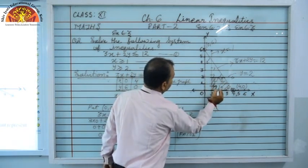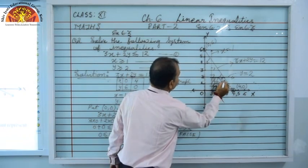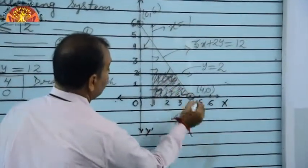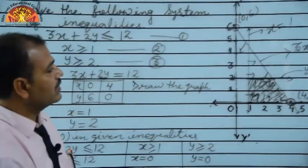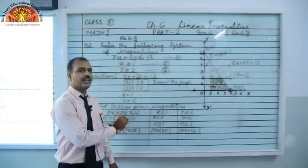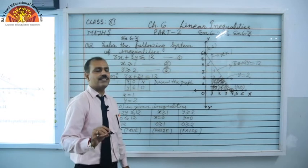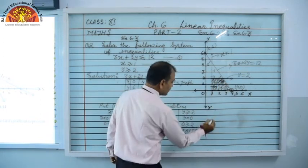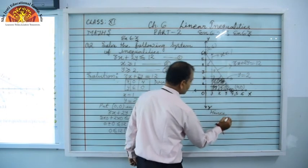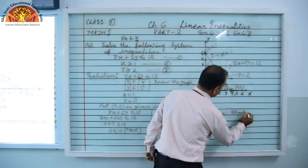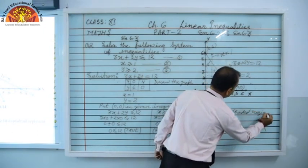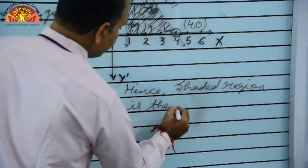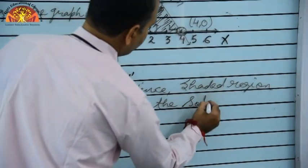The bounded region is our shaded region. This topic is very important because it also appears in Class 12. The shaded region is very important to identify correctly. First check all the inequalities, and the region that satisfies all inequalities is your shaded solution region. Hence, the shaded region is the solution of the given inequalities.